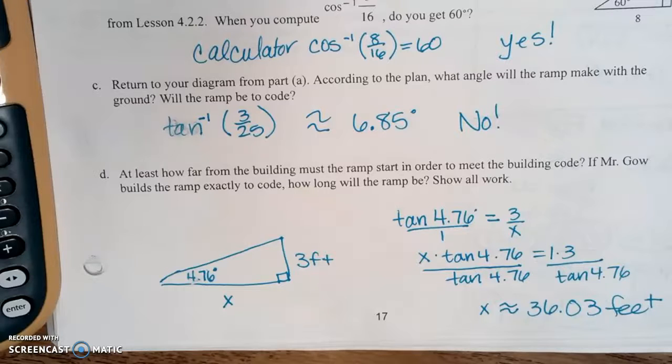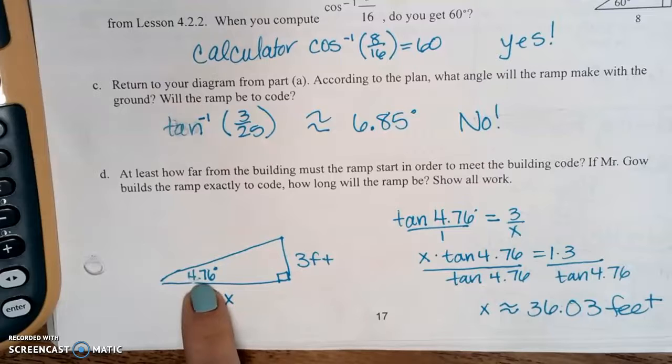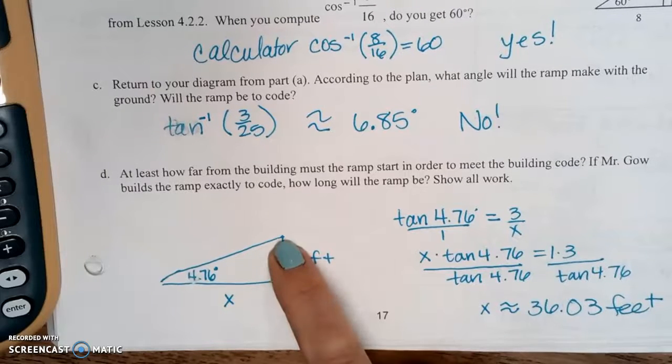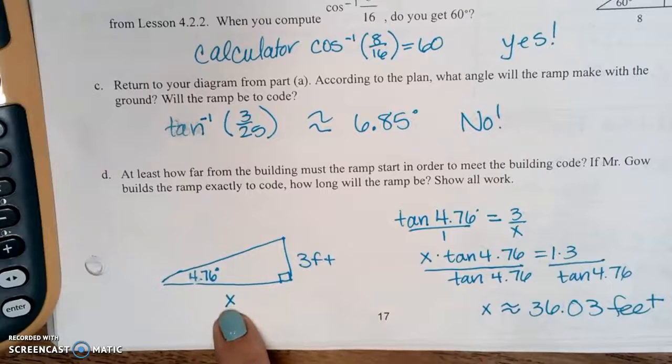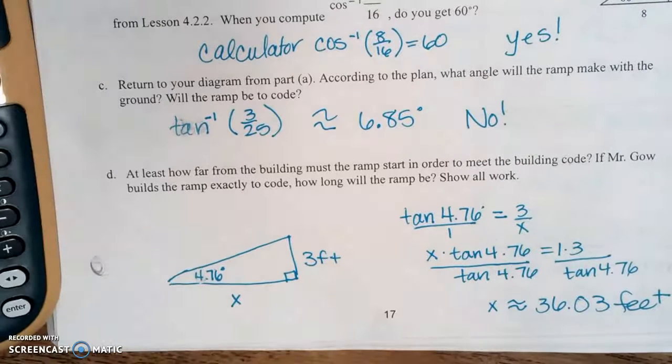So for part D, it says, at least how far from the building must the ramp start in order to meet the building code? If Mr. Gao builds the ramp exactly to code, how long will the ramp be? So the largest that angle can be is 4.76. So I filled in the angle measure of 4.76. It has to be three feet from the ground up to the doorway. We need to change that 25 to some number, but we don't know what that number is yet. So that's where we're going to put our variable.